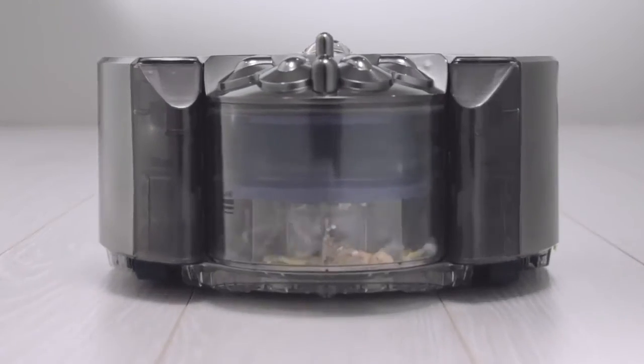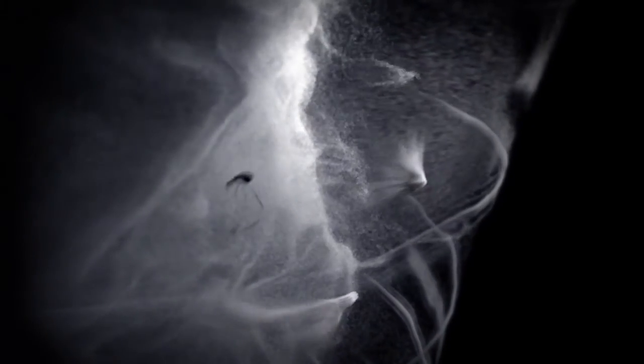Patented Radial Route Cyclone technology generates powerful centrifugal forces to fling dust out of the air and into the bin.